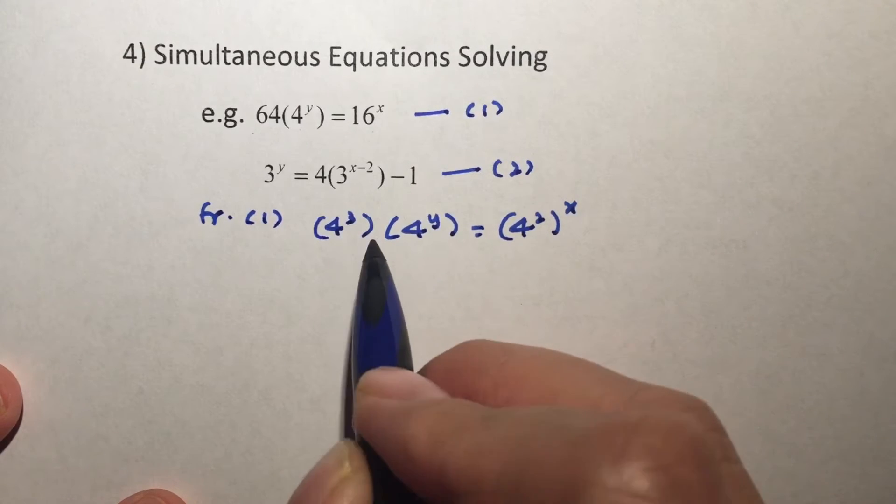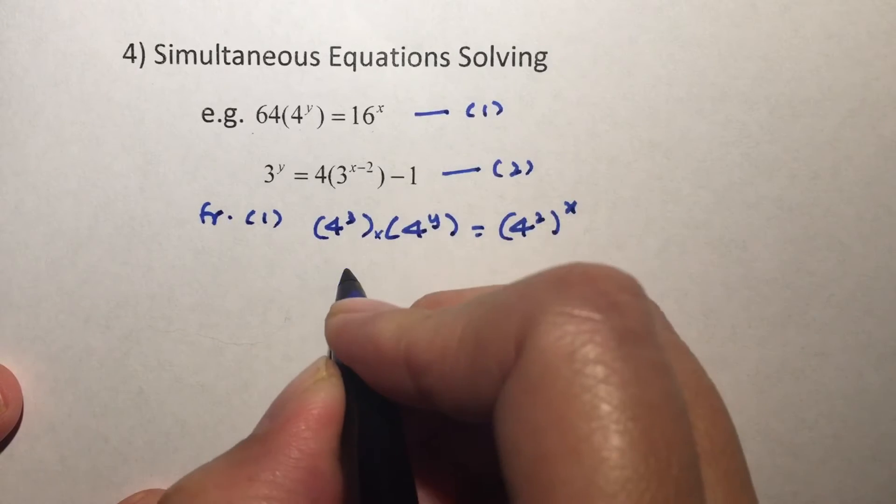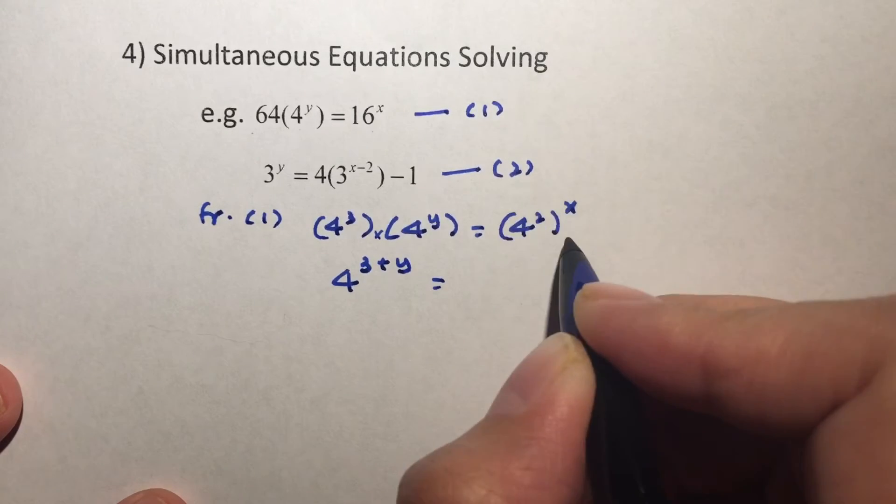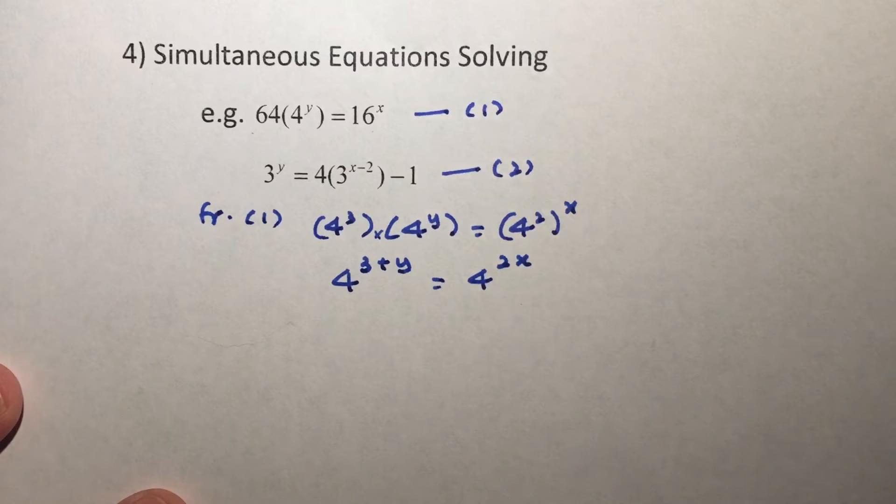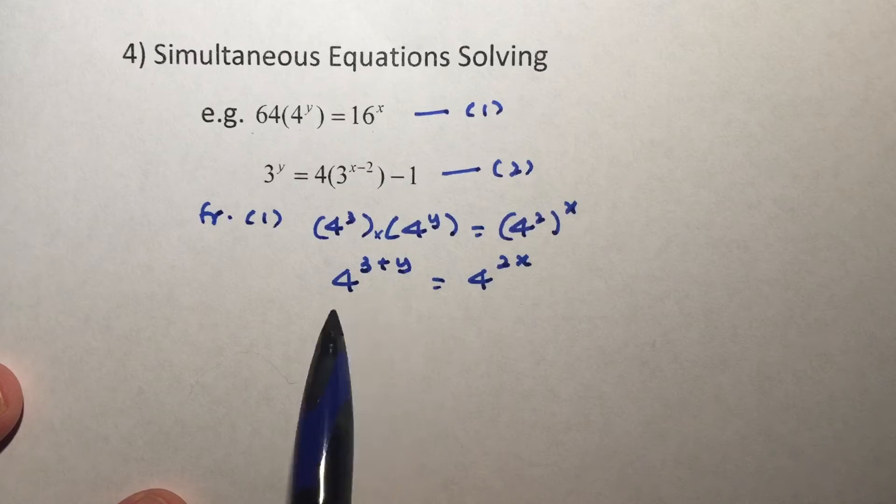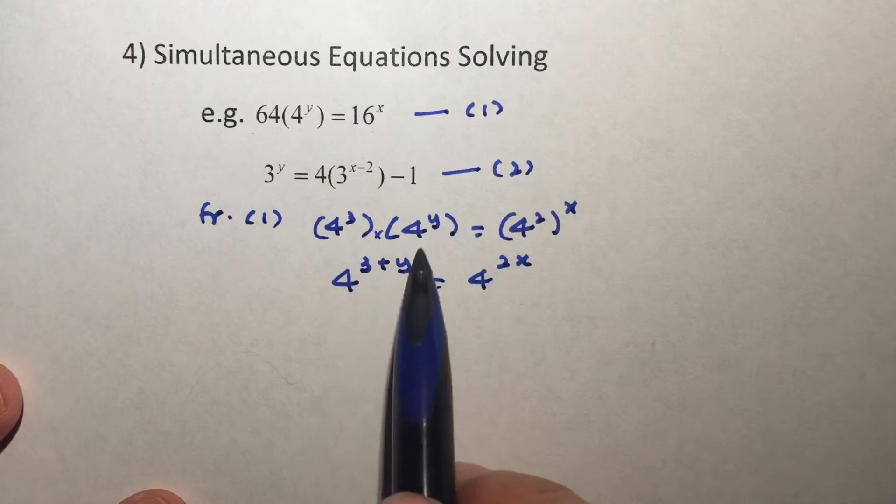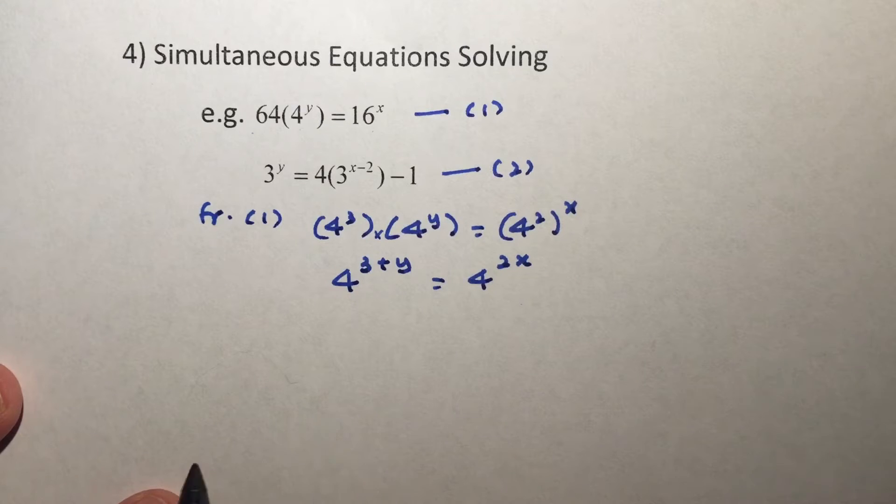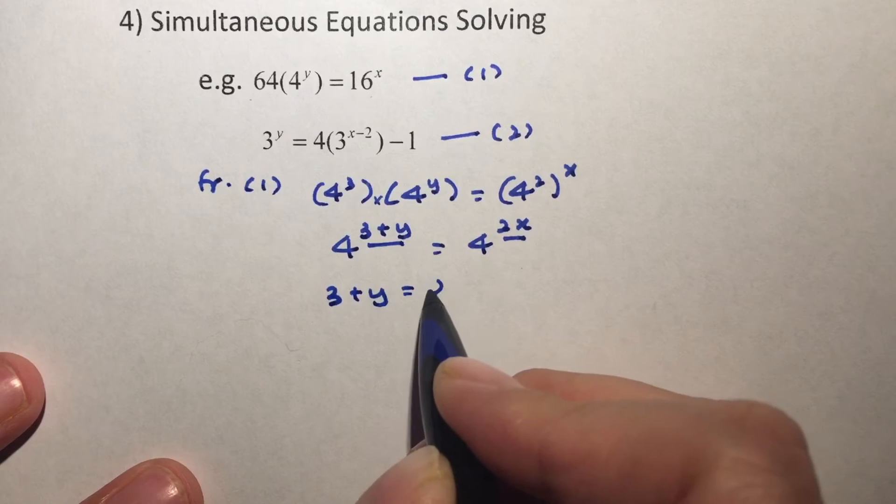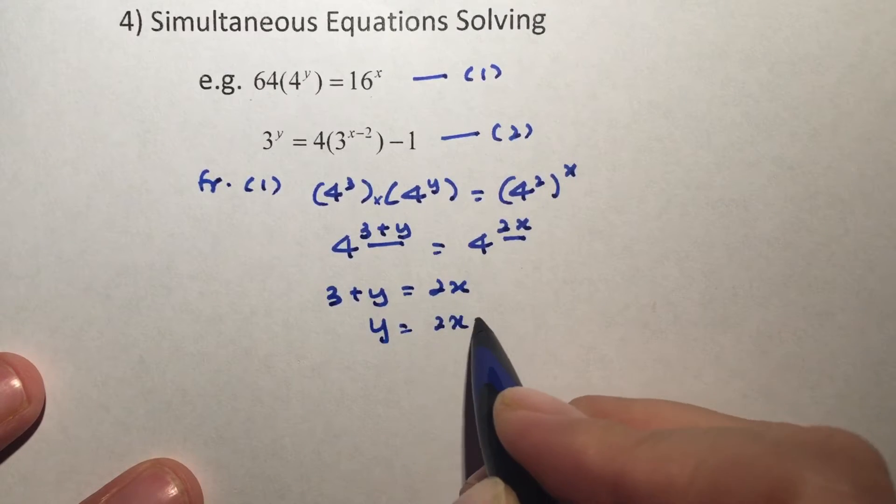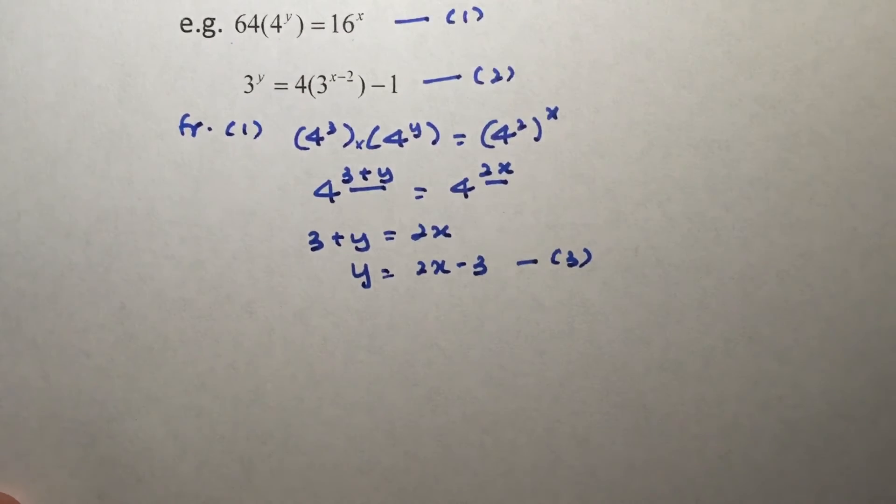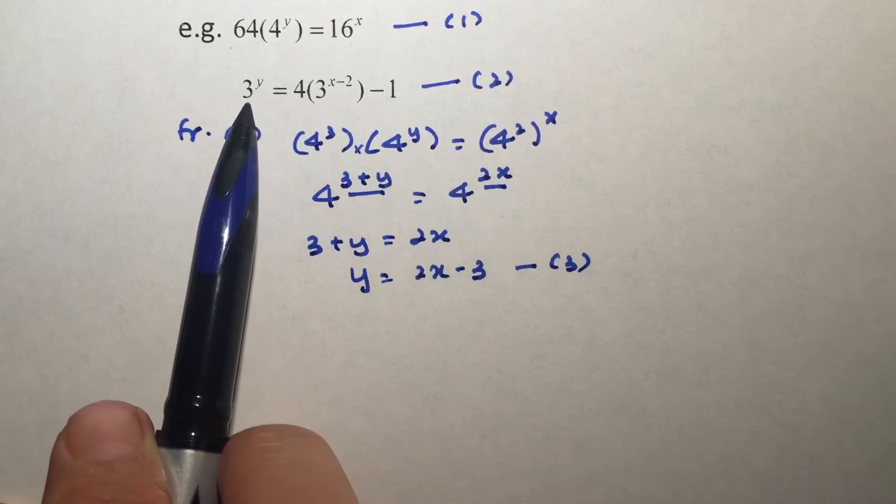So in this case here, I can use the law of the indices, the first law in fact. So I have 4 to the 3 plus y. On this side here, I'll use the third law of the indices, so I have 4 to the power of 2x. So since I can make the left-hand side and the right-hand side have the same base now, I can do what we call the equating of the exponents, similar to how we did the solving. So in this case here, I'm equating these two together, so I have 3 plus y is equal to 2x. So y is the same as 2x minus 3, and let me call this as equation 3. Now I'm going to just leave it there for a short while, and we're going to start looking at equation 2.